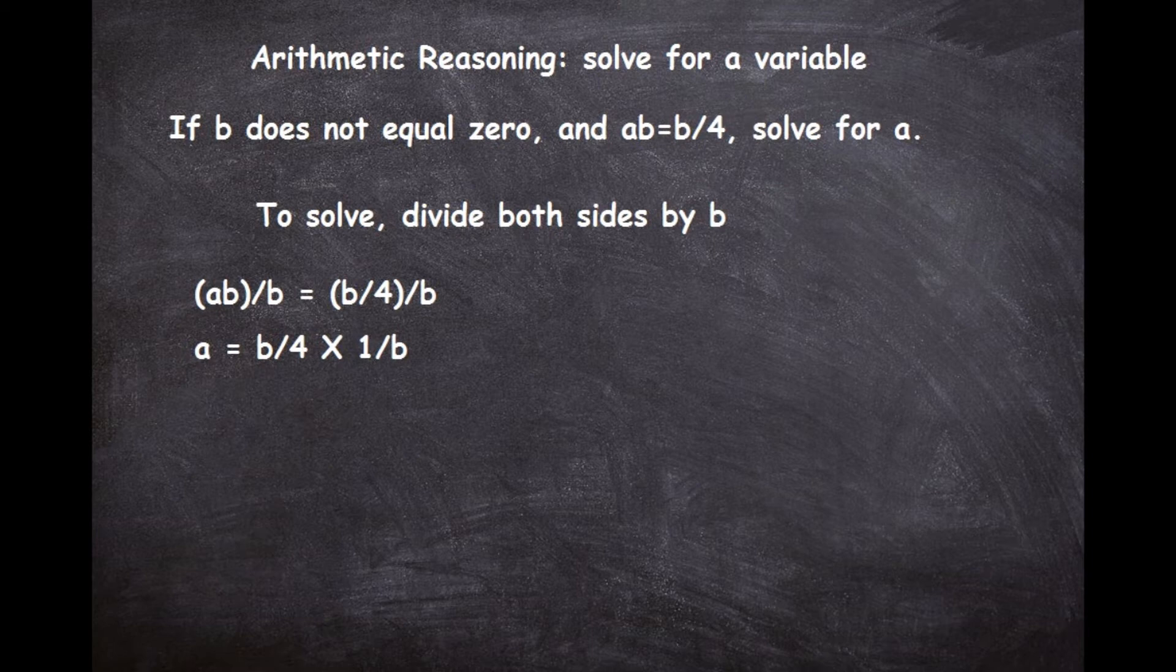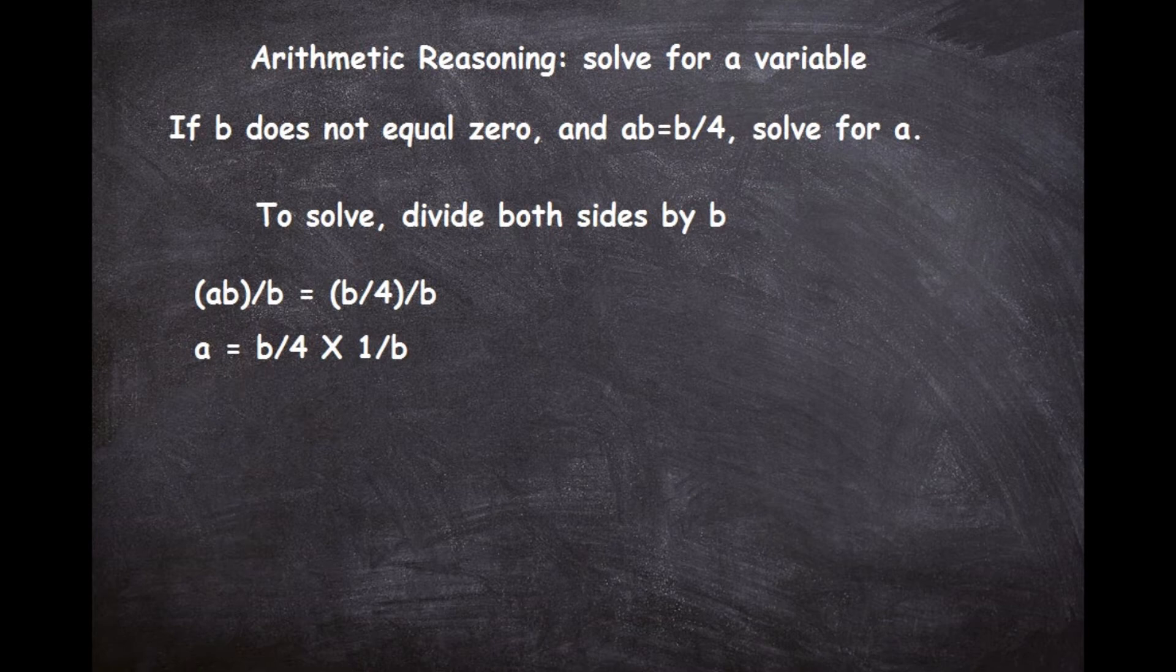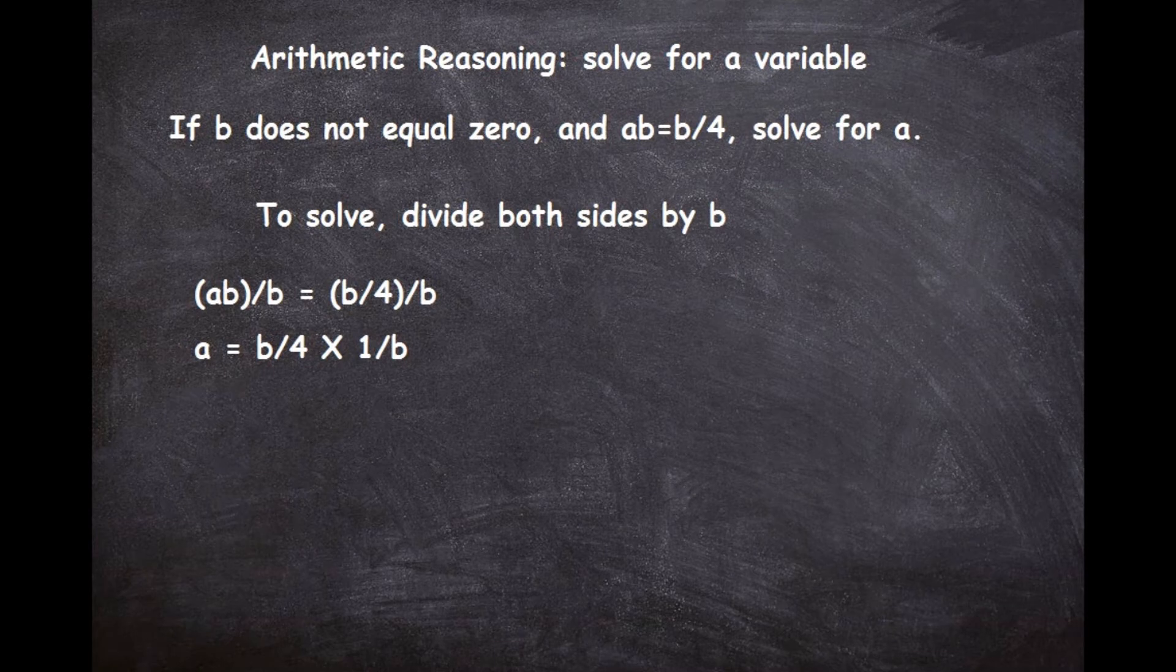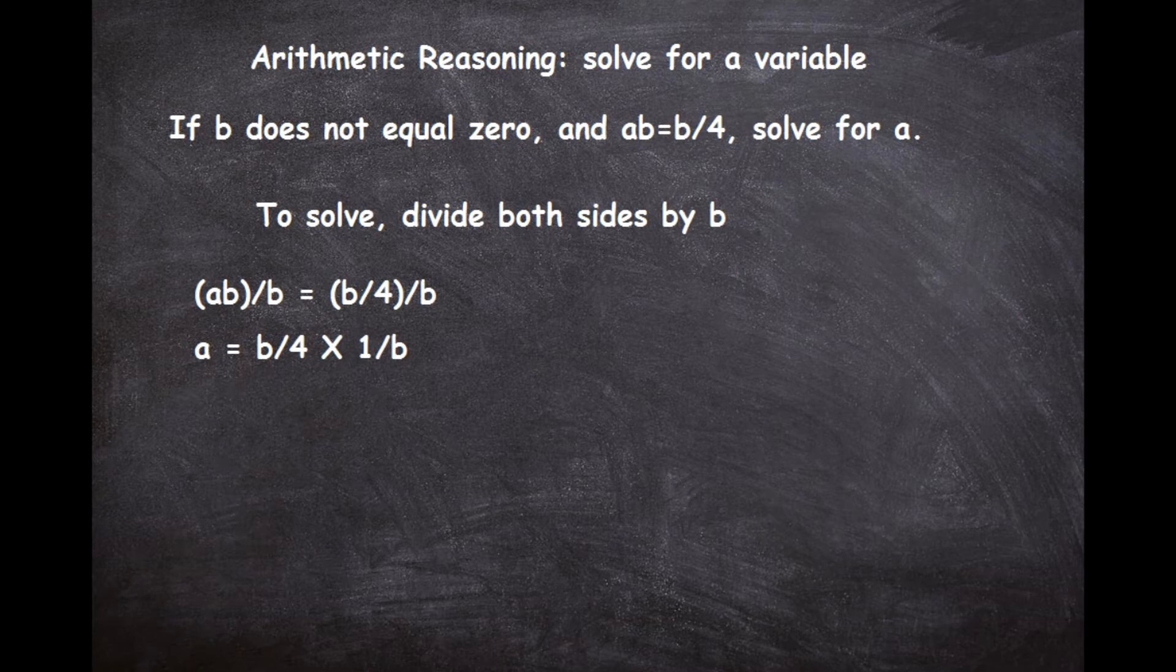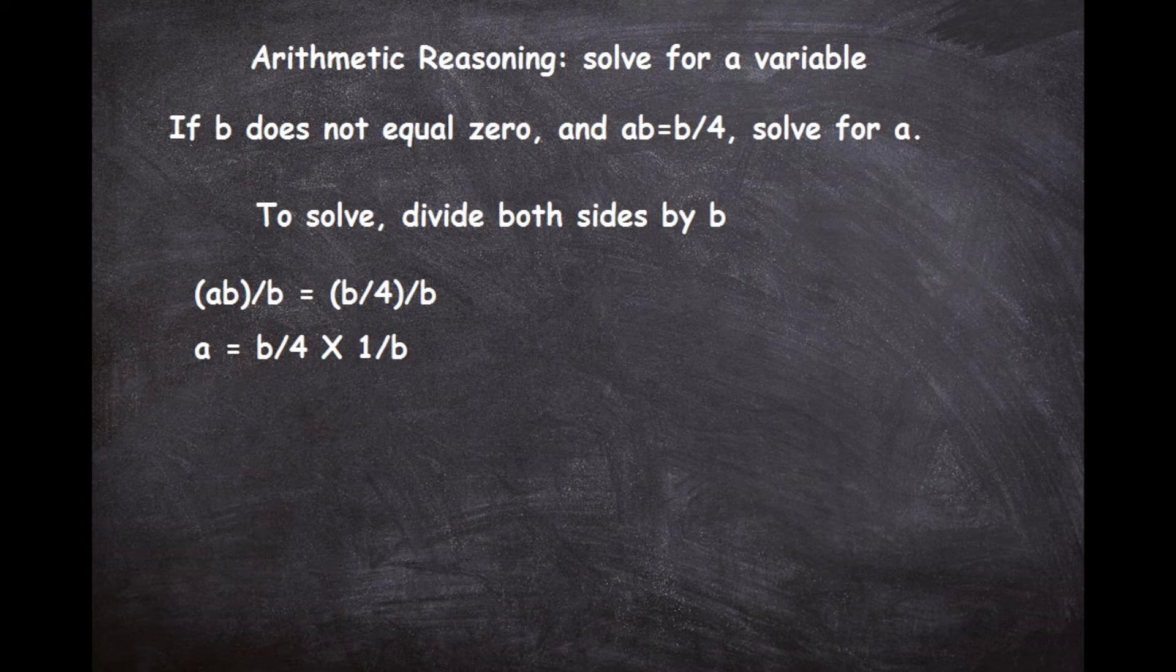times 1/b. And the way I got that is the b/4 value, when you divide something by b, it's the same as multiplying times 1 over that number. So if you were to divide by say 2, it's the same as multiplying by 1/2. If you divide by 5, it's the same as multiplying times 1/5.